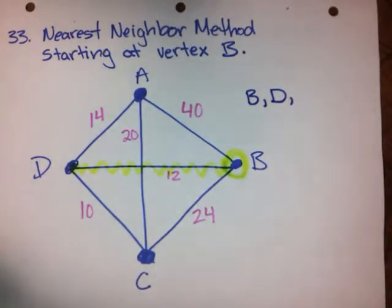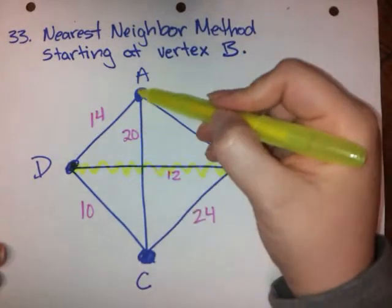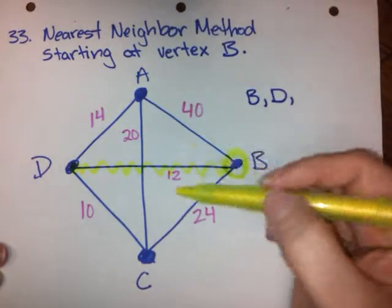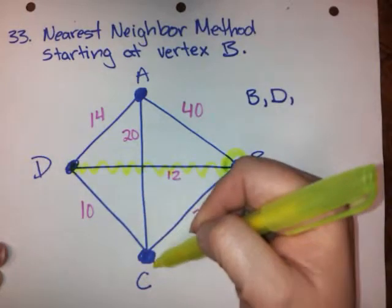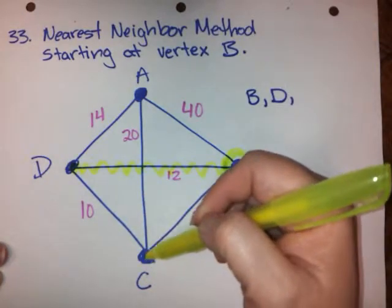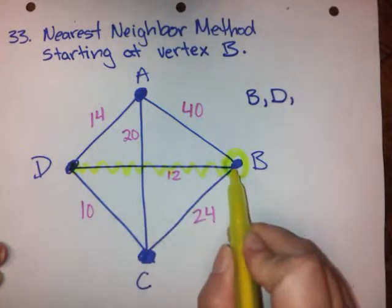Okay, so the next step that I need to take is the cheapest valid step. I could go D to A, that's 14. I could go D to C, that's 10.